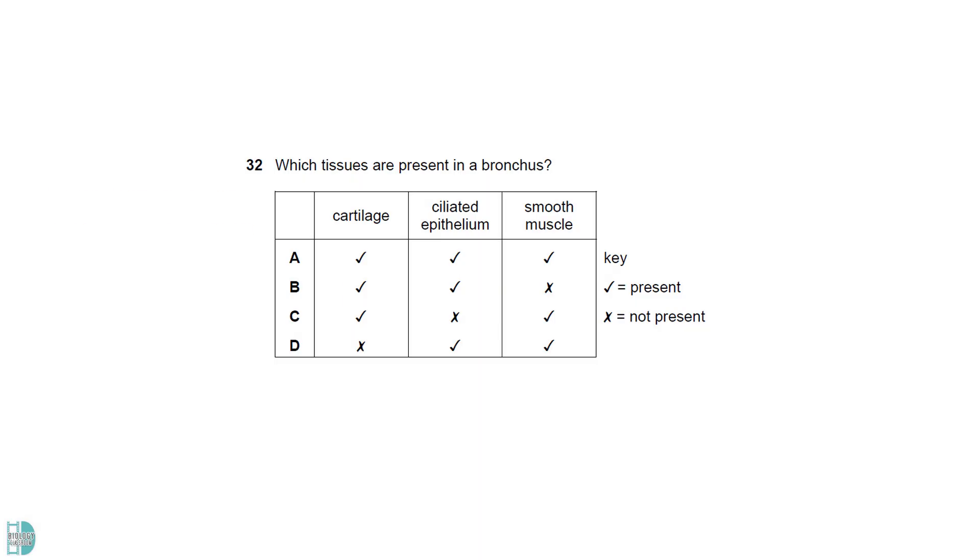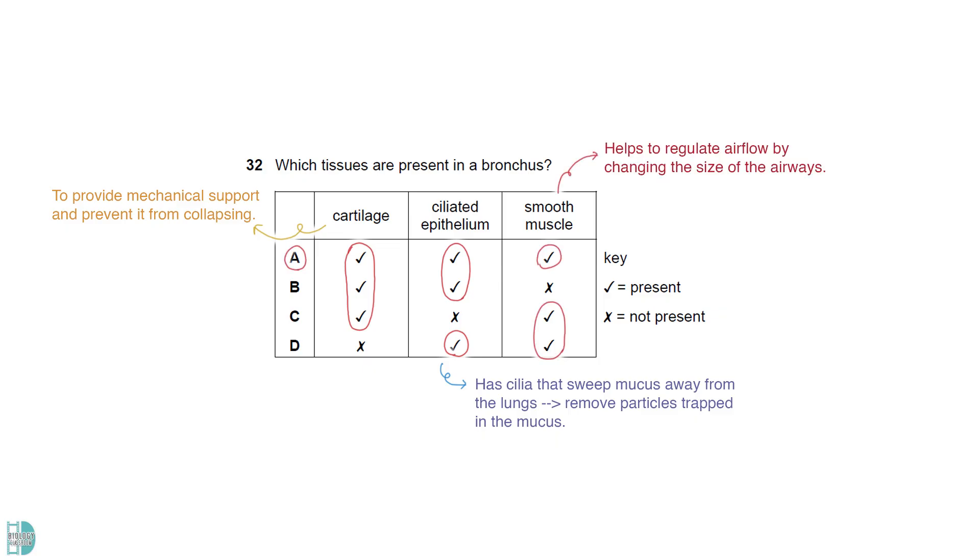The bronchus has cartilage to provide mechanical support and prevent it from collapsing. Ciliated epithelium has cilia that sweep mucus away from the lungs. This helps to remove particles trapped in the mucus. Smooth muscle helps to regulate airflow by changing the size of the airways.